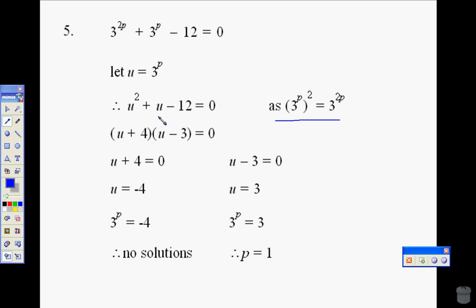3 to the power of p would just be u minus 12. Now we factorize a nice quadratic. We can factorize that, u plus 4, u minus 3.